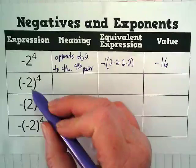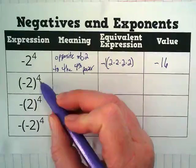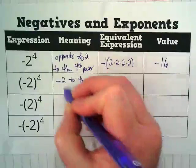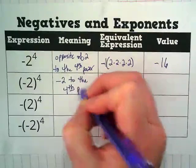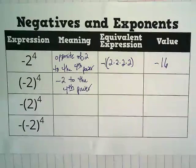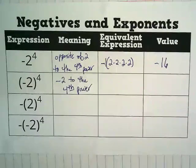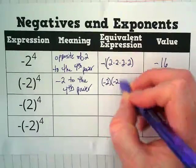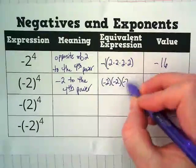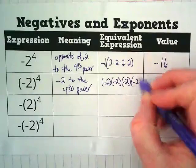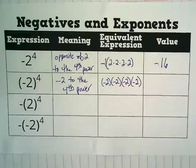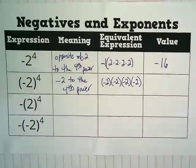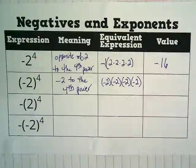When I have negative 2 inside of parentheses raised to the fourth power, that means negative 2 to the fourth power. An equivalent expression to that is negative 2 in parentheses times negative 2 times negative 2. And what would be the result when we multiply all those? Positive 16.